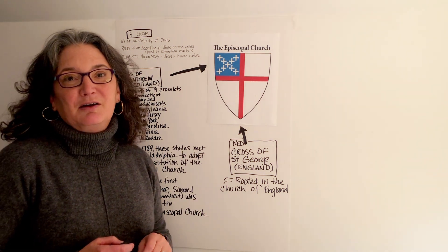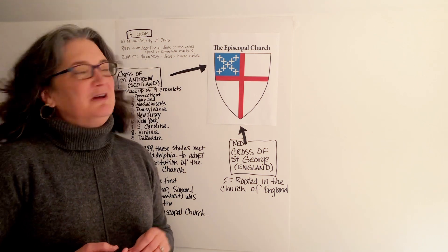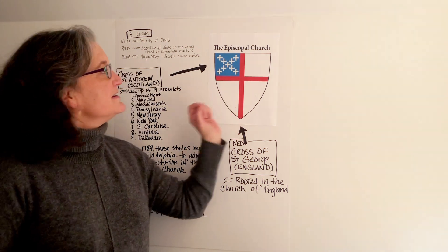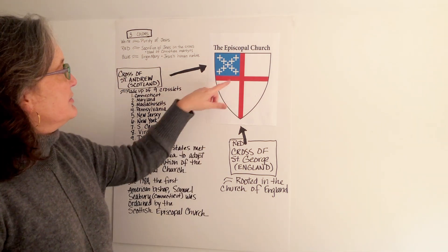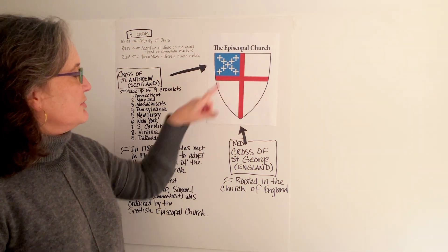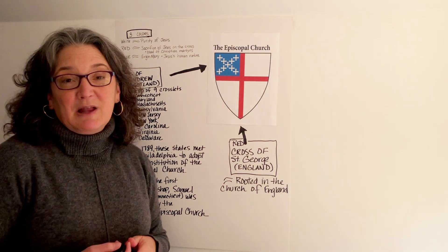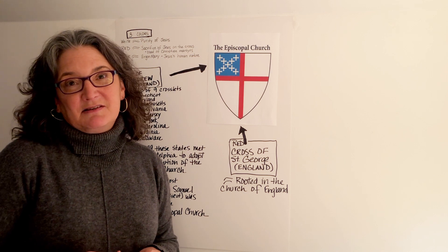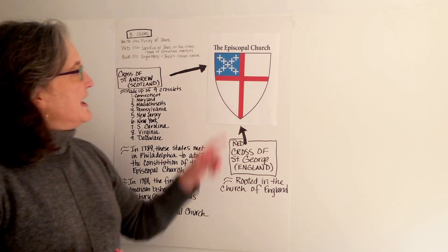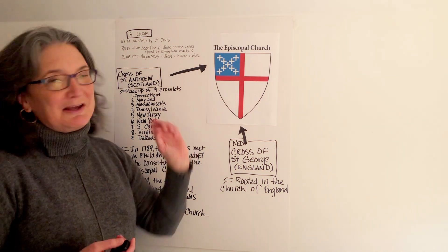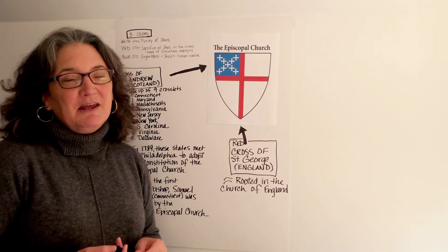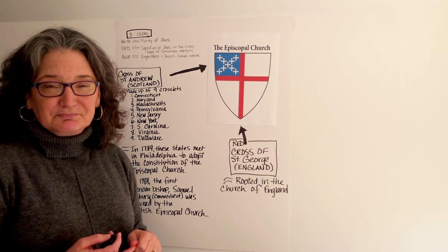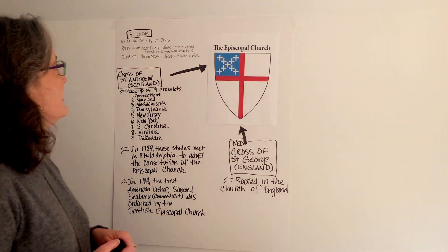Starting with the three colors, which are red, white, and blue. The white background symbolizes the purity of Jesus. The red in the cross of St. George symbolizes Jesus's sacrifice on the cross, as well as the blood of all Christian martyrs. And then the blue — the blue of the Virgin Mary — symbolizing Jesus's human nature coming from his mother Mary.